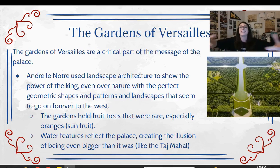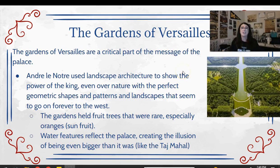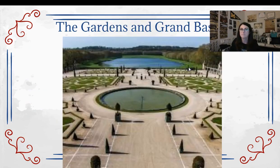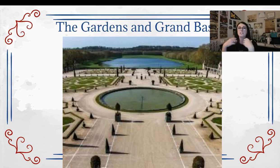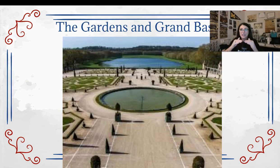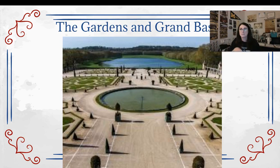Everything extends as far as the eye could see to say he not only controls man, he controls nature as well. In the gardens there were citrus trees and rare plants, especially oranges — a sign of wealth because this is the Sun King, so of course he's going to have the sun fruit. The pathways are always sunk down a little bit below the level of the greenery so it looks like perfect geometric patterns and shapes.